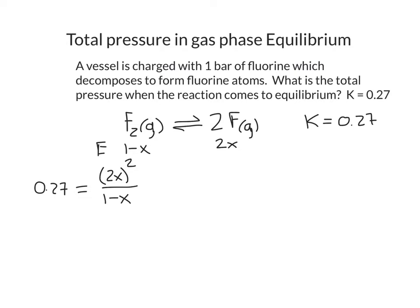To find the total pressure I need the pressure of fluorine atoms and the pressure of diatomic fluorine. Since this is a gas phase reaction the equilibrium constant is in terms of pressures, so x will have units of bar. The total pressure equals the sum of both species: (1 minus x) plus 2x, which simplifies to 1 plus x.